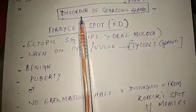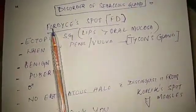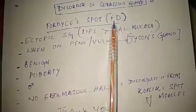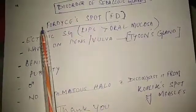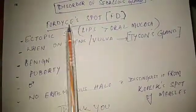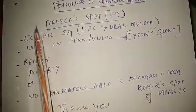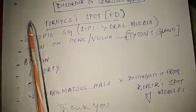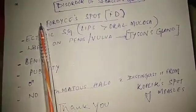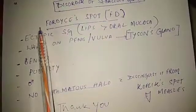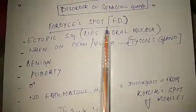Now we will discuss the disorders of the sebaceous gland. The most common disorder is Fordyce disease, also called Fordyce spots. Since this word does not have 'fox' in it, it is not a disorder of the sweat gland — as I already told you, when the word 'fox' appears, you remember that fox sweats a lot as it runs a lot. So, without 'fox' in it, it is not a disorder of the sweat gland; it is a disorder of the sebaceous gland.